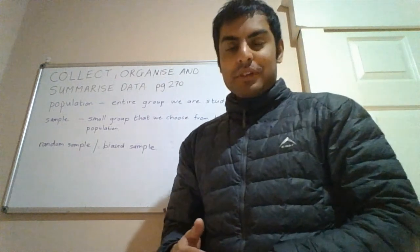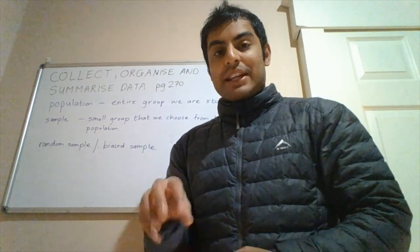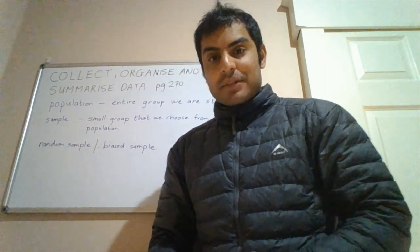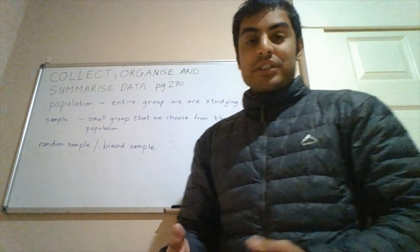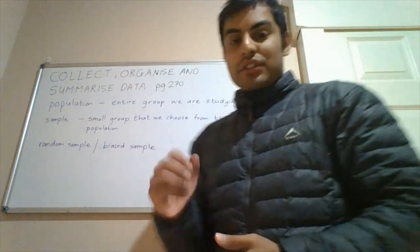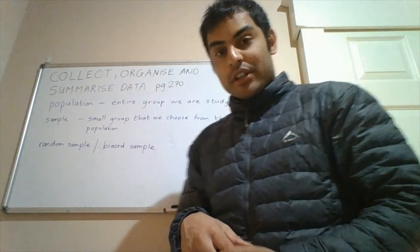Next, we have our sample. And this is a small group that we choose from the population for when we are testing. So our population might just be too large for us to test everybody. So experimentally, we just pick a small group of people to look at.